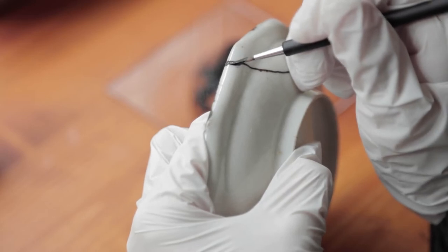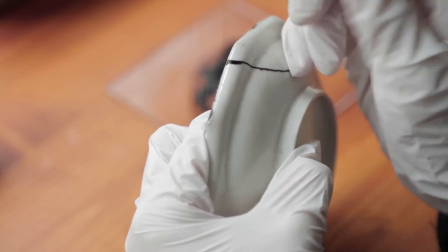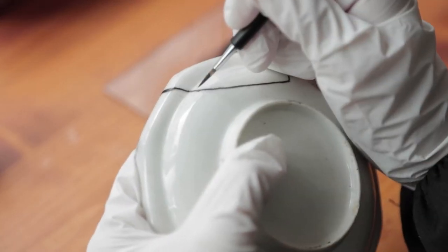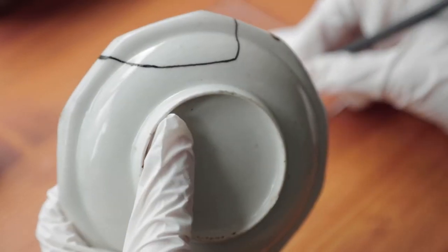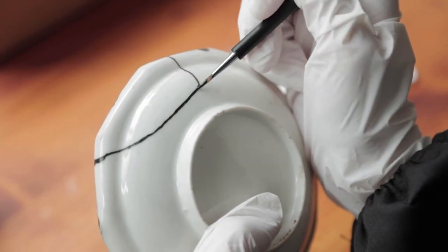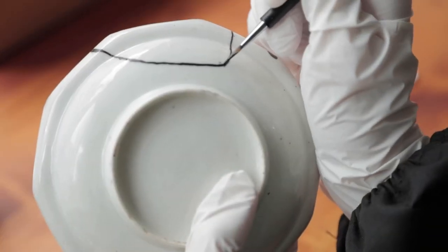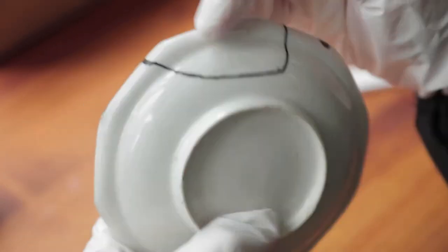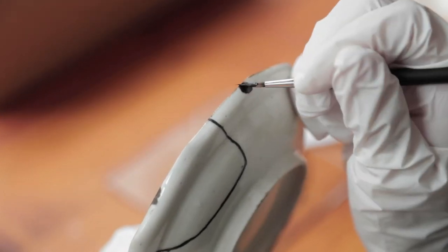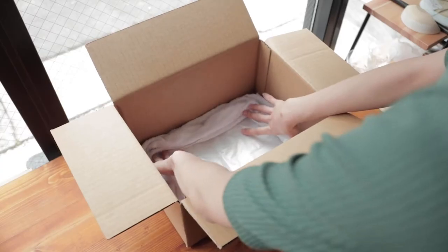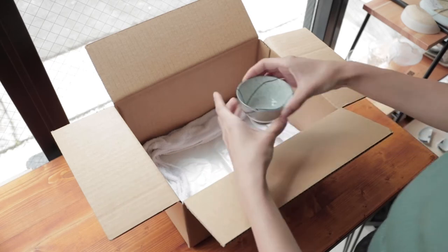Remove the oil completely off the fine point brush and paint the black urushi thinly on sabiyurushi. Apply black urushi thinly to prevent shrinking. Leave the item in the urushi box for at least one day.